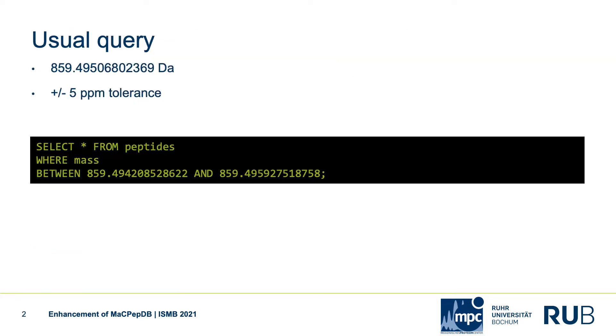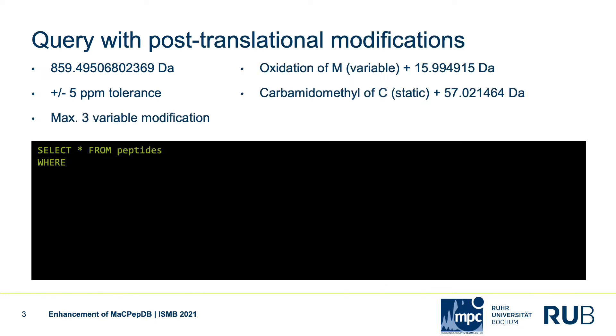Here you can see the simple query to MacPeptiDB for a mass of 859.49 Dalton and a tolerance of plus or minus 5 ppm.